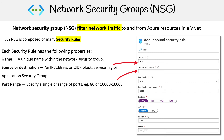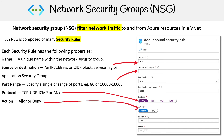The port range could be just port 80, all ports using an asterisk, or a range of ports. You can set the protocol to TCP, UDP, or ICMP. You set the action to either allowed or denied, and then you set the priority, which is a number between 100 and 4096.